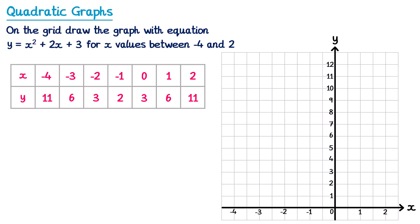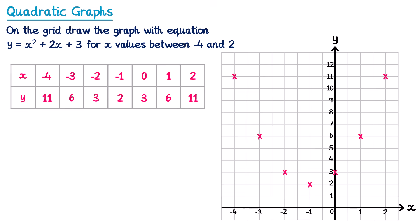Now we're ready to turn this into a graph. We plot each pair of x and y values as a coordinate. The first pair is negative 4, 11; then negative 3, 6; negative 2, 3; negative 1, 2; 0, 3; 1, 6; and 2, 11. To complete the graph we join each cross together. You might be tempted to use a ruler and join them with straight lines, but this will not get you full marks. This is a quadratic graph and it should be a nice smooth curve.